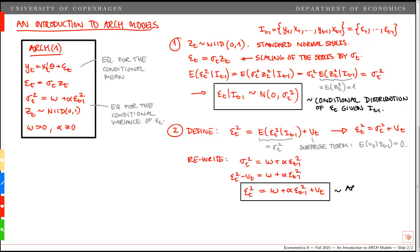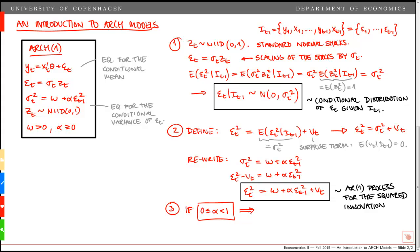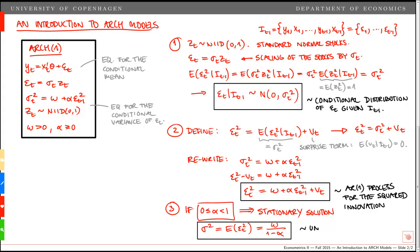This shows we have an AR(1) process for the squared innovation epsilon_t squared. For an ARCH(p) model, the same approach yields an AR(p) process. This AR(1) is stationary if alpha is less than 1 in absolute value; combined with the positivity restriction, stationarity holds when alpha is between 0 and 1. The unconditional variance sigma squared equals the stationary solution of the AR(1), given by the constant divided by 1 minus alpha.